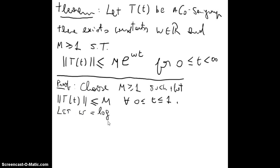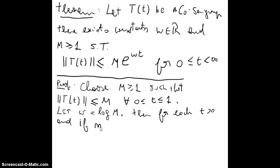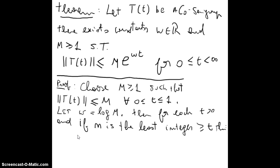Let ω equal the logarithm of M. Then for each t positive, let n be the least integer greater than t — so n is the smallest integer greater than t.